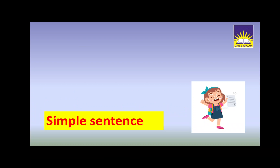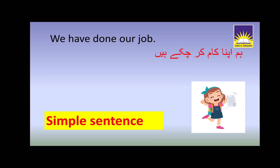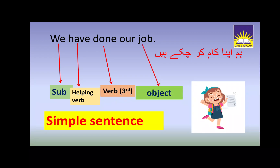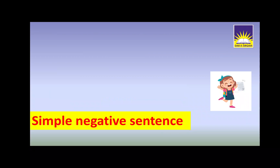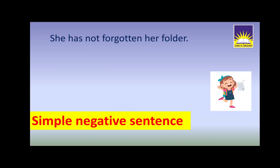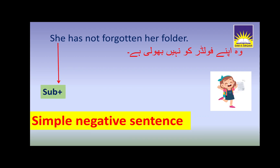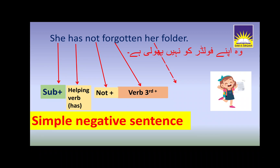For the simple sentence, the example is: 'We have done our job.' — हम अपना काम कर चुके हैं. Here, 'we' is the subject, 'have' is the helping verb, 'done' is the third form of verb, and 'our job' is the object. For the simple negative sentence: 'She has not forgotten her folder.' — वो अपने फोल्डर को नहीं भूली है. Here, 'she' is the subject, 'has' is the helping verb, then you put 'not' after the helping verb, followed by the third form of verb, and finally the object.